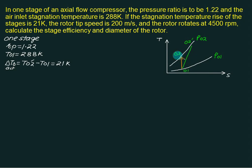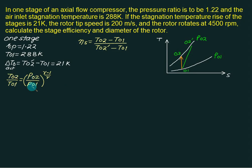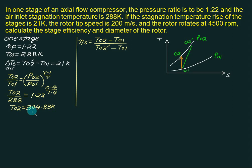Stage efficiency is defined as isentropic temperature rise divided by actual temperature rise: (T02 − T01) / (T02 dash − T01). To find T02, we use the isentropic relation T02/T01 = (p02/p01)^((γ−1)/γ). With rp = 1.22, T01 = 288, and (γ−1)/γ = 0.4/1.4, we get T02 = 304.83 K. Substituting: stage efficiency = (304.83 − 288) / 21 = 80.17%.